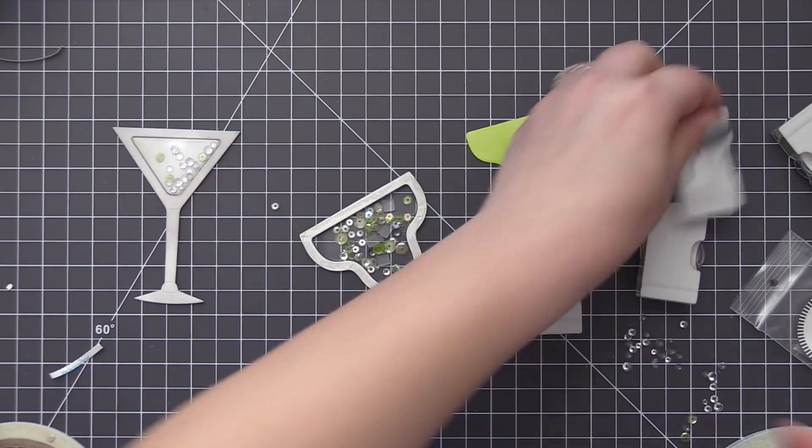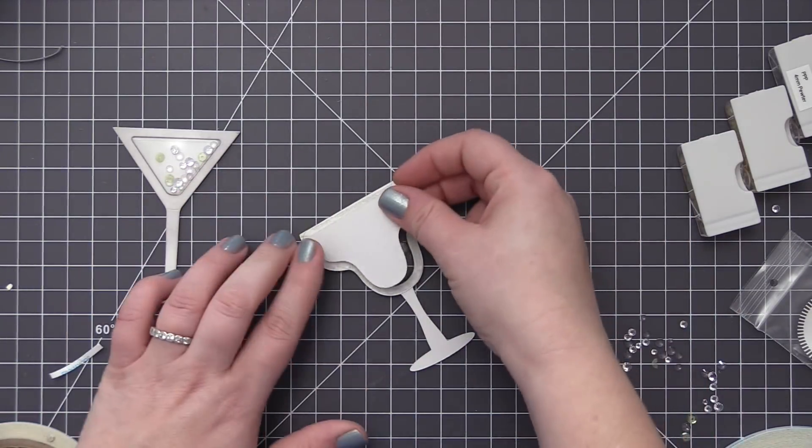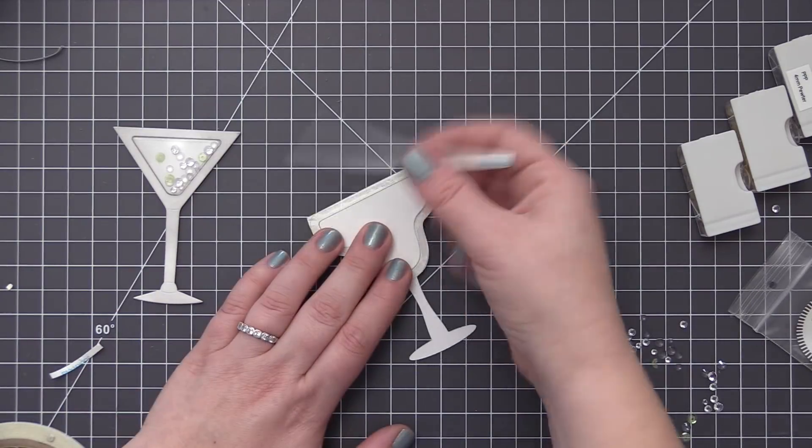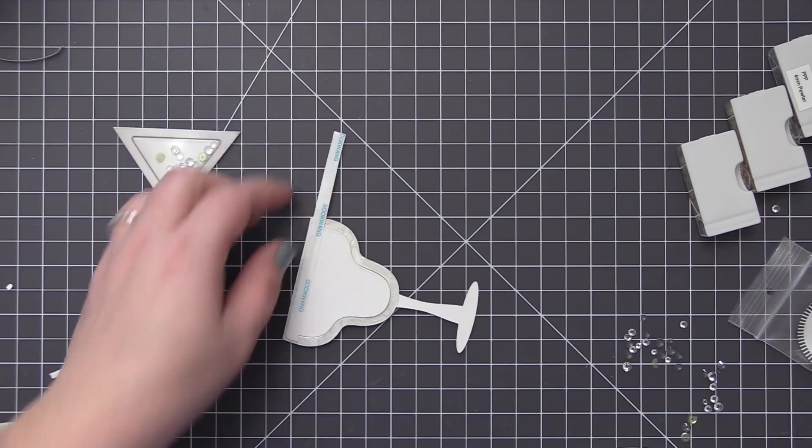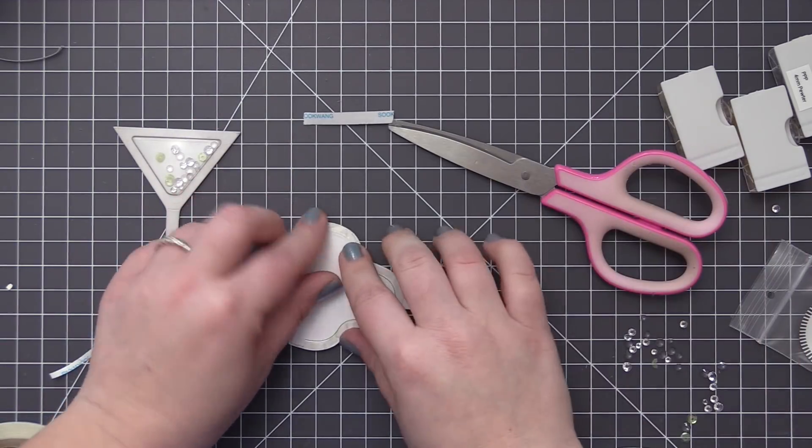And then I'm going to seal this one up the same way I did with the martini glass. So I'm just going to take that backer piece and put it in place and then I'm just going to use some score tape to hold it there. And this is just going to make sure that none of my sequins or beads or anything fall out when I assemble the card.